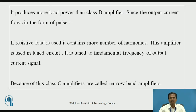It produces more load power than a Class B power amplifier since the output current of the Class C power amplifier flows in the form of pulses. If a resistor load is connected in the collector circuit of the power transistor, it contains more number of harmonics. This amplifier is used in a tuned circuit, and the Class C power amplifier is tuned to the fundamental frequency of the output current signal. Because of this, Class C power amplifiers are also called narrow band amplifiers.